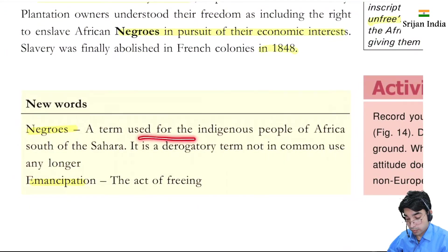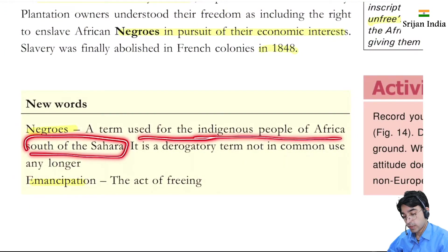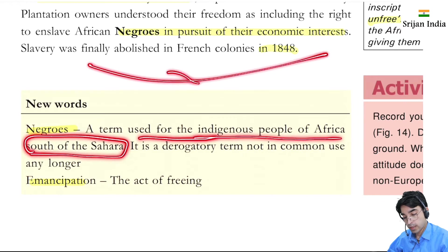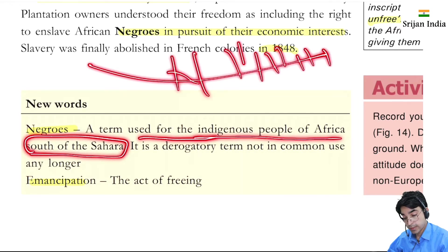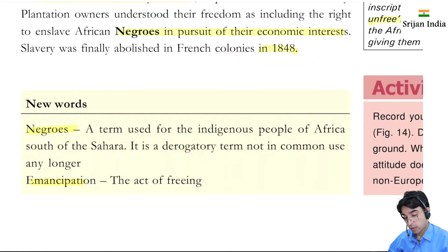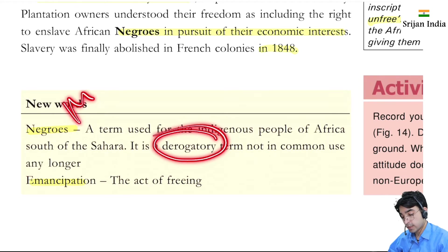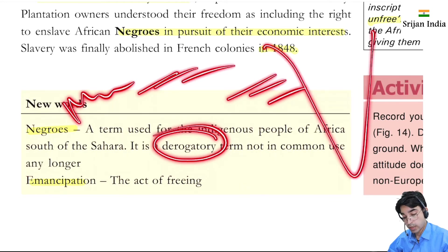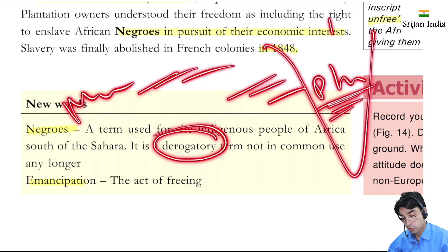The term 'Negros' was used for the indigenous people of Africa south of the Sahara. The West African coast even became known as the 'Slave Coast,' similar to the Gold Coast or Ghana Coast. This is a derogatory term no longer in common use. As Nelson Mandela also advocated, the racism between black and white must be stopped.